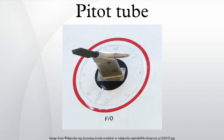It is widely used to determine the airspeed of an aircraft, water speed of a boat, and to measure liquid, air, and gas velocities in industrial applications. The Pitot tube is used to measure the local velocity at a given point in the flow stream, and not the average velocity in the pipe or conduit.